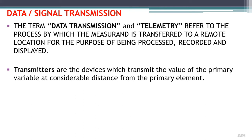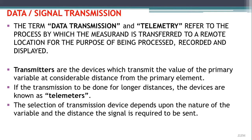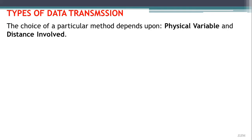Transmitters are devices which transmit the value of the primary variable at a considerable distance from the primary element. If transmission is to be carried out over a longer distance, those devices are known as telemeters. The selection of transmission devices depends upon the nature of the variable and the distance the signal is required to be sent. For transmission, the measured variable is converted to a transmittable signal, either pneumatic or electric, so it can be recovered by a remote indicating, recording, or controlling device.